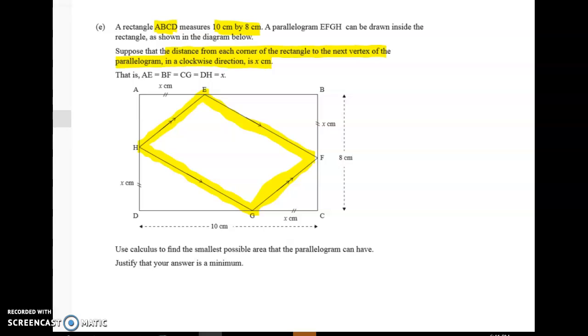So what we've got on here is we've got that this length from here to here is x and this length here is x. This length over here from A to E is x and I've lost one. Just a sec, where's the other x? This is x and this one down here is also x. Okay so each of these is x.